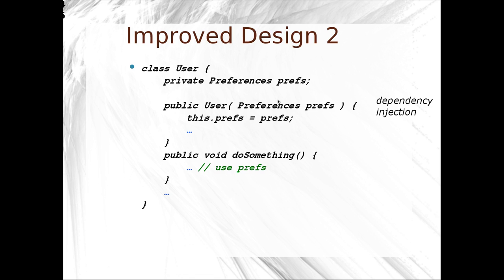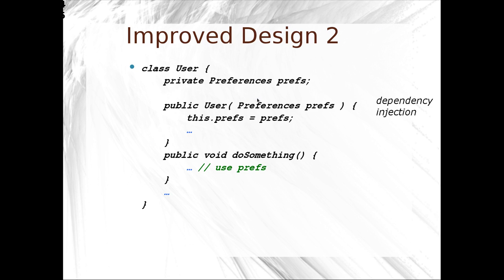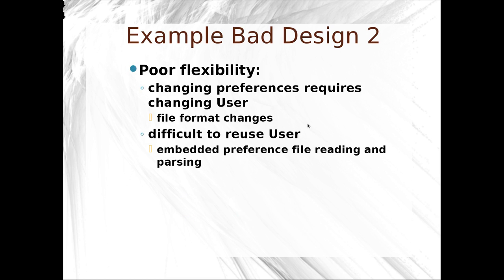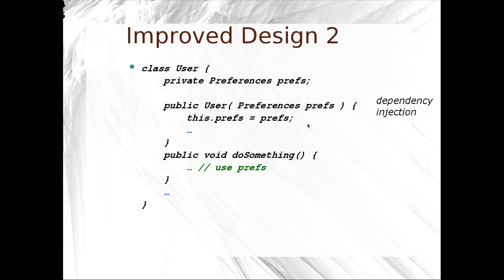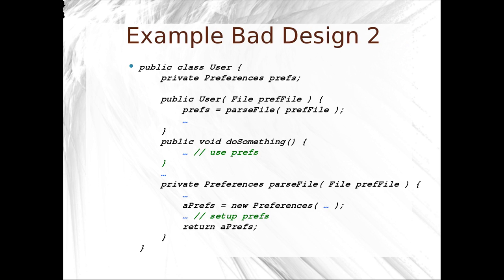The dependency injection version of user allows you to inject the preferences directly. This doesn't stop you from leaving the original constructor around. This new constructor sets the preferences and allows you to inject your own preferences — like a sample test preferences that you could inject right in. This design, the dependency injection version, is better because we don't really care if the user file format changes. The preferences don't have to be made from files. We can also move parse file out, put it in a different class — we can use it in a user preferences parser — and then just delegate to the user preferences parser, instead of requiring the method to be in the class.